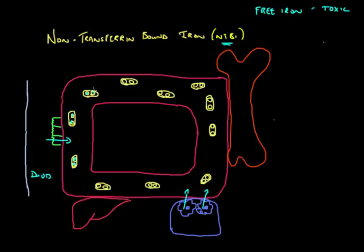So the reality is that when we overwhelm the capacity of transferrin to bind iron, in whichever way, we will end up with iron that cannot find a seat. And this iron will not be bound to transferrin. And in very simple terms, that is what we mean if we speak about non-transferrin bound iron.